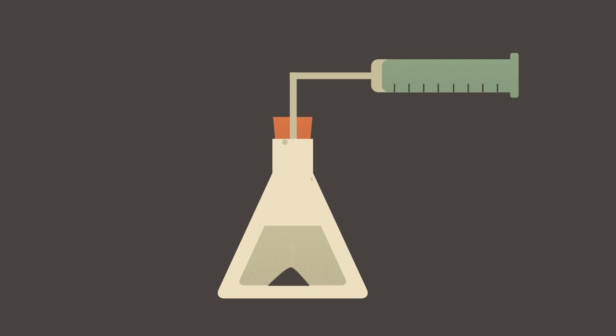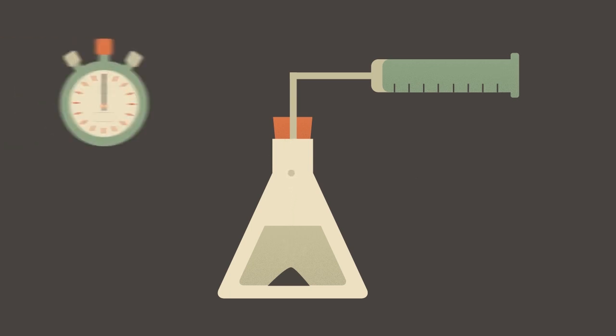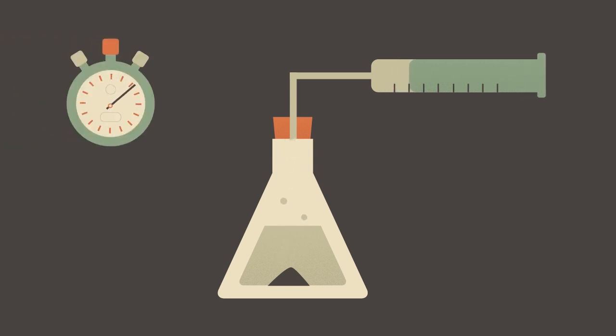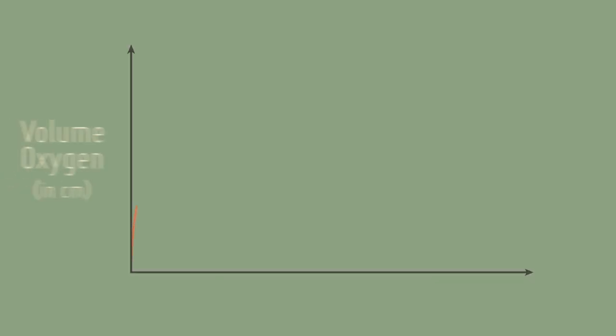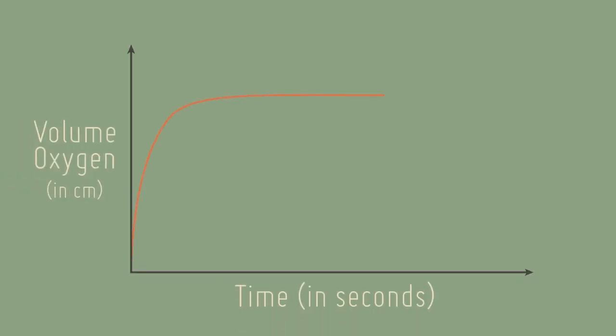The volume of oxygen evolved can be recorded at specific time intervals. Plotting the volume of oxygen produced against time will give a graph similar to this one here.